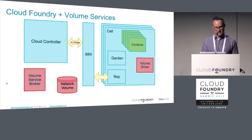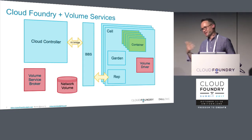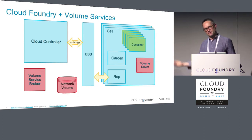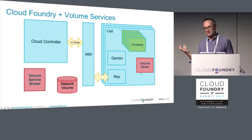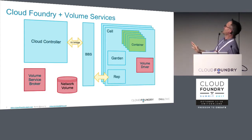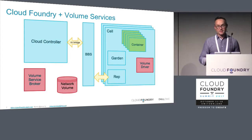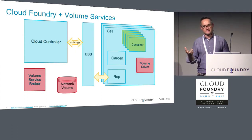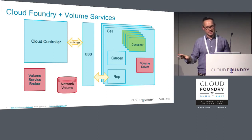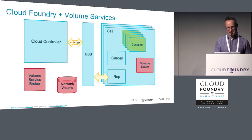Volume services adds a service broker to this picture. You may or may not have gone to talks about the Open Service Broker API, but it has a mechanism for service brokers when you bind a service to an application to specify that the binding should have one or more volume mounts associated. Then typically it's some network volume, which may or may not be provisioned by the service broker. In the case of our NFS one, we just attach to random NFS shares, but in some other service brokers, we actually do the provisioning. And finally, there's a volume driver, which is co-located on the Diego cell.